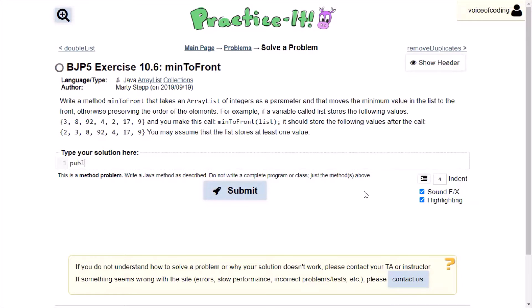So the first thing that we need to do is to make our method. There are no returns in this problem, so it's going to be void. And then our method name should be minToFront.